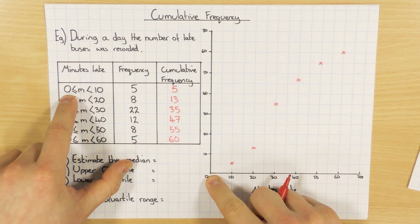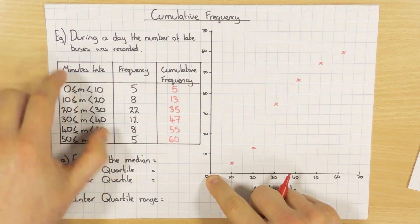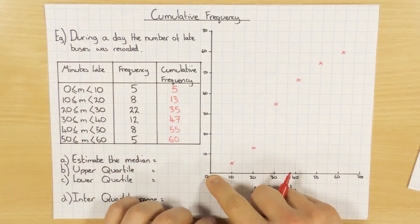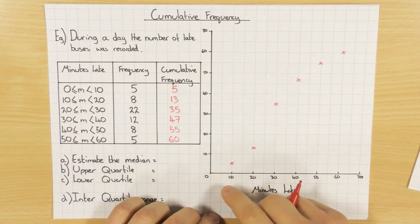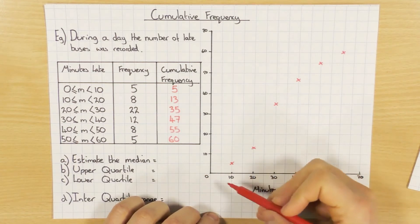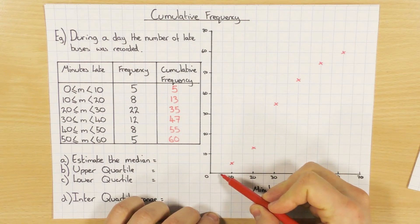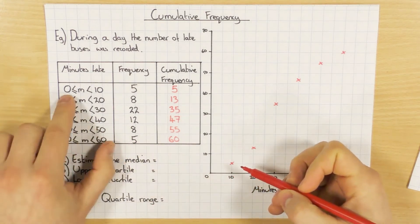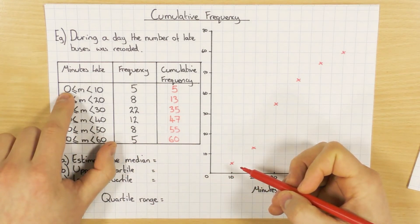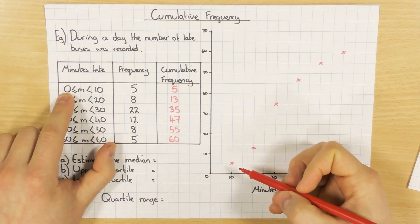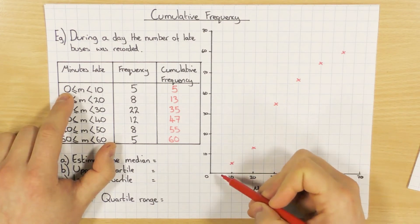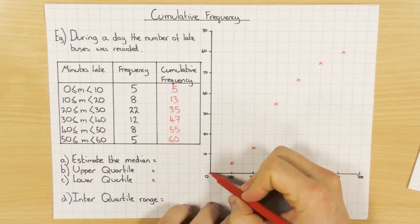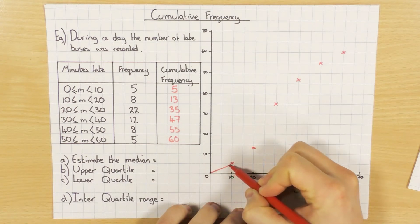And just another thing to be aware of, obviously here the lowest point is 0, so that's where I'm going to start from. However, I have seen in previous exam questions where once they've given you the table, underneath it they've actually said what the lowest value is. So they might have said, oh, the lowest value is 5, in which case make sure you start at 5. If they don't tell you anything, and all you've got is this, you start at this point here. In this case, it's 0. So just be aware of that, wherever you need to start from.